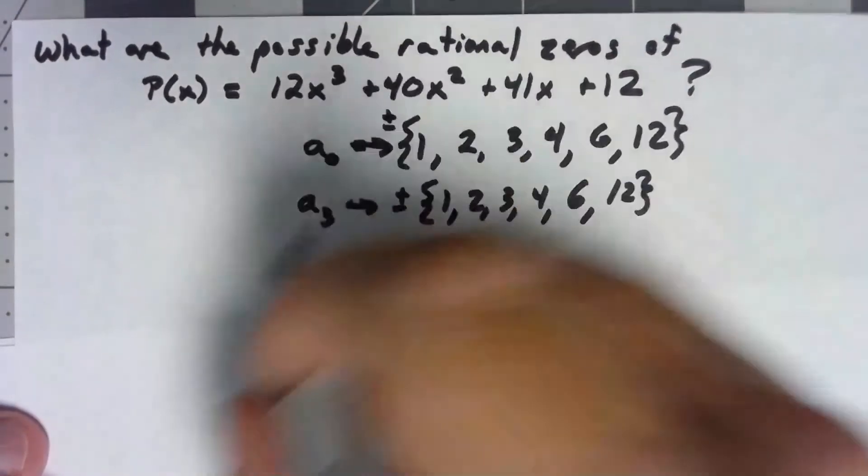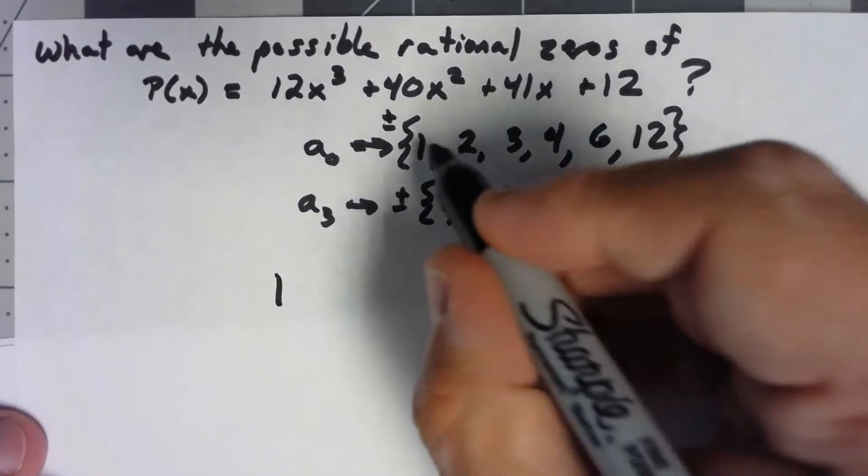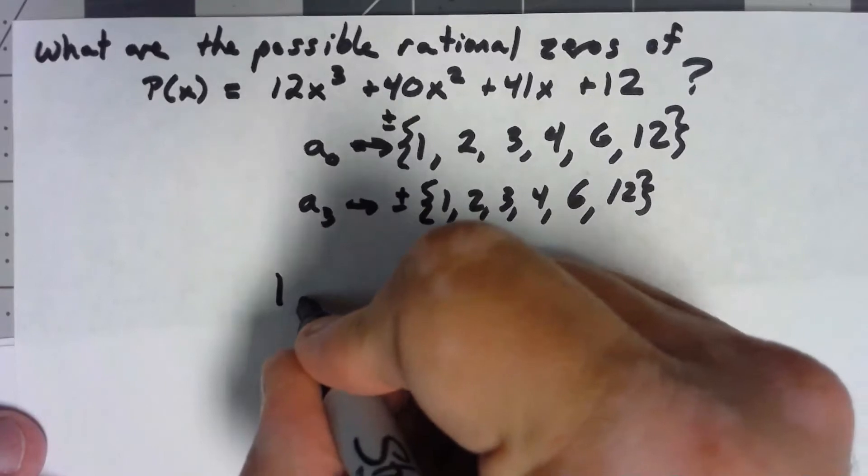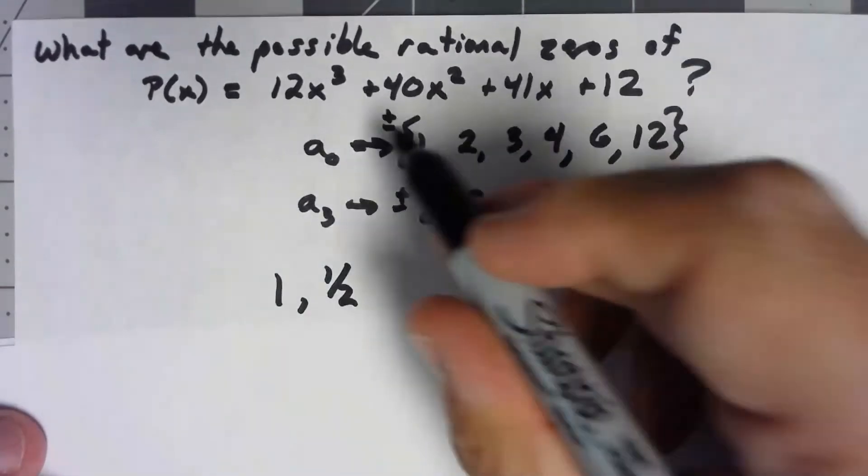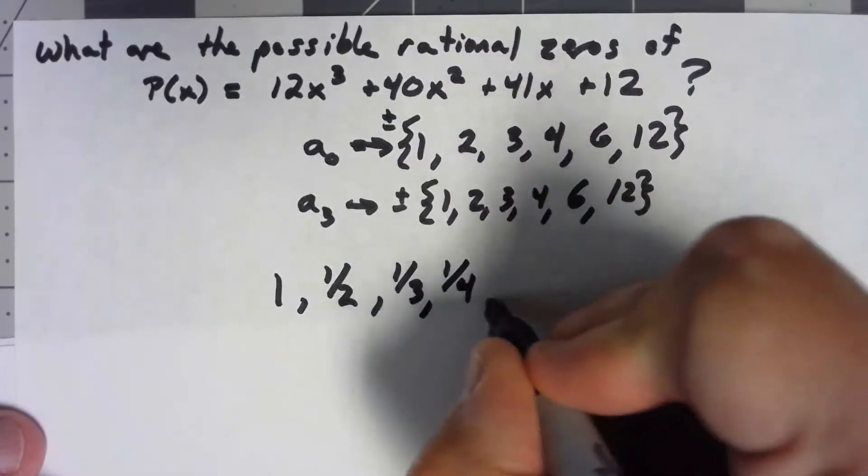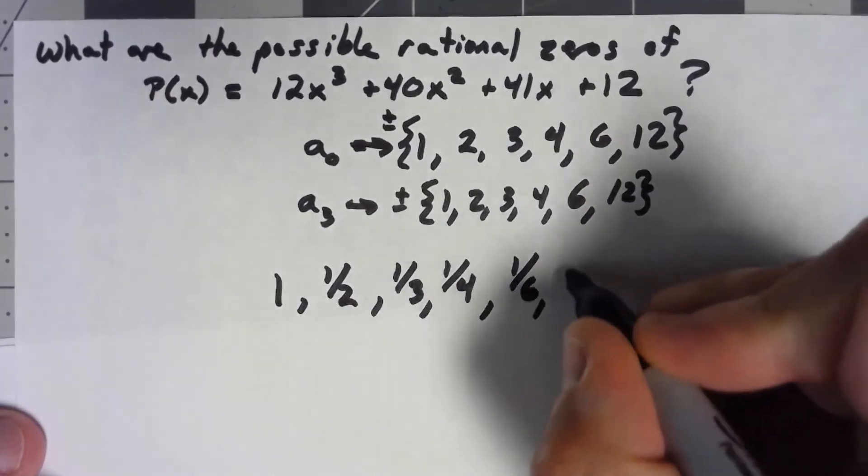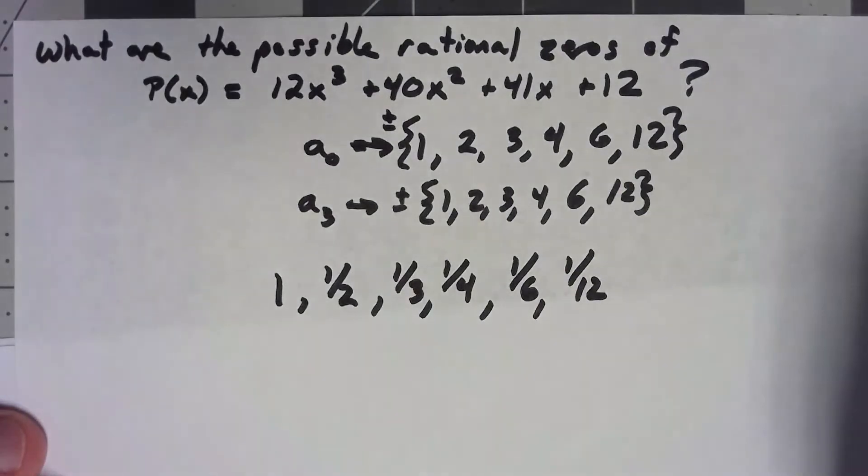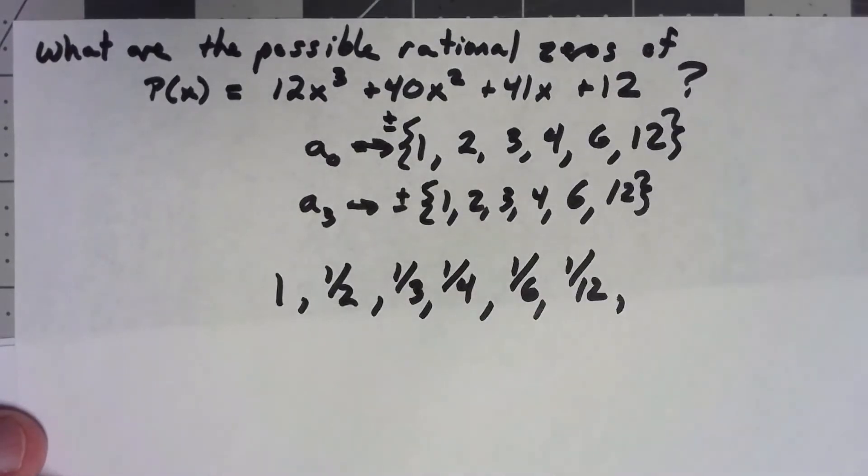So let's see, if I take 1 over 1, that gives me 1. 1 over 2, that would be a half. 1 over 3, 1 over 4, 1 over 6, and 1 over 12.